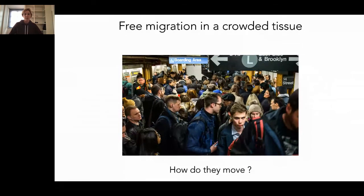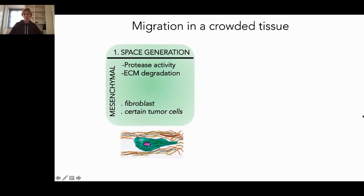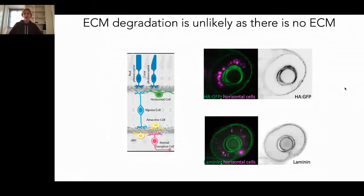Migration in crowded tissue has been shown to occur in two different ways. You can have space generation, for example seen for mesenchymal cells, where you have protease activity or ECM degradation — fibroblasts and certain tumor cells use this method. Or you can have strategies of space adaptation, called amoeboid-like migration, where cells undergo frequent direction changes, cell shape changes, and nuclear deformations. Rana looked at both possibilities. What she noticed is that it's very unlikely these cells degrade the underlying ECM, because in the region where these cells migrate there is no ECM — neither hyaluronic acid, laminin, nor other ECM components are present in significant amounts.